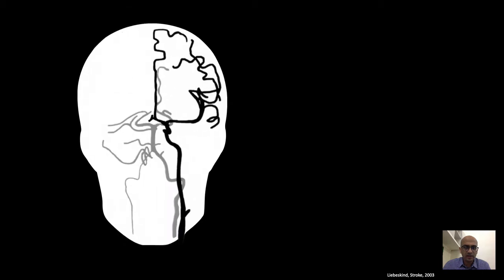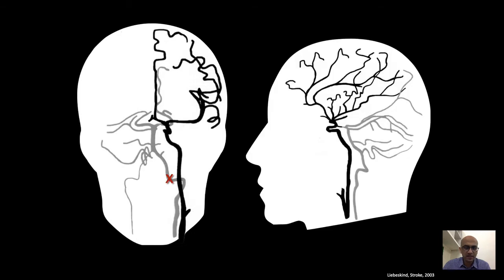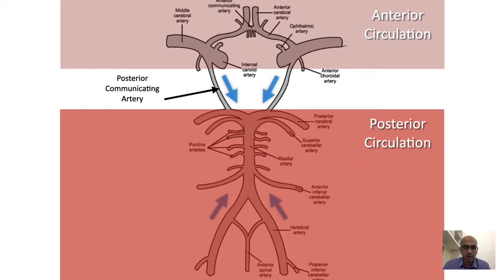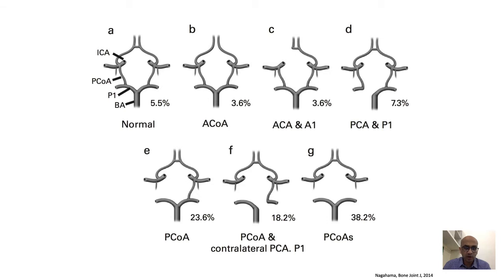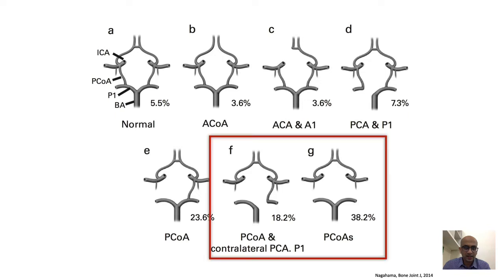However, in about 25% of patients, one of the vertebral arteries is hypoplastic, and in this situation, if the dominant vertebral artery is injured, collateral flow can be established from the anterior circulation via the circle of Willis. The main connection between the anterior and posterior circulation at the circle of Willis is the posterior communicating artery. But it is important to know that there is a great amount of variation at the circle of Willis. In a Japanese study, a significant number of patients had no communication between the anterior and posterior circulation.